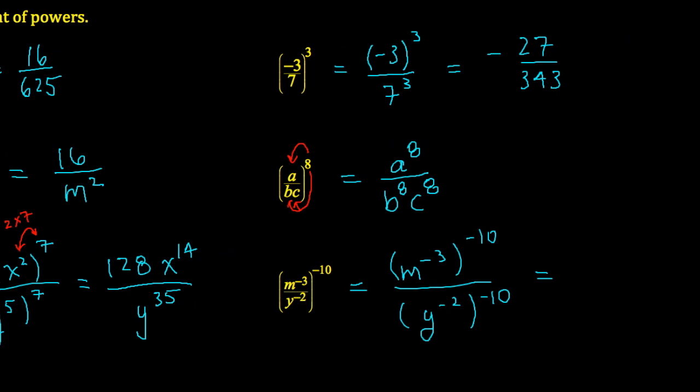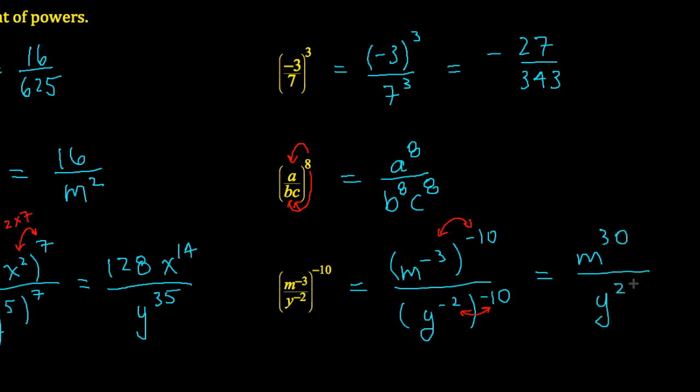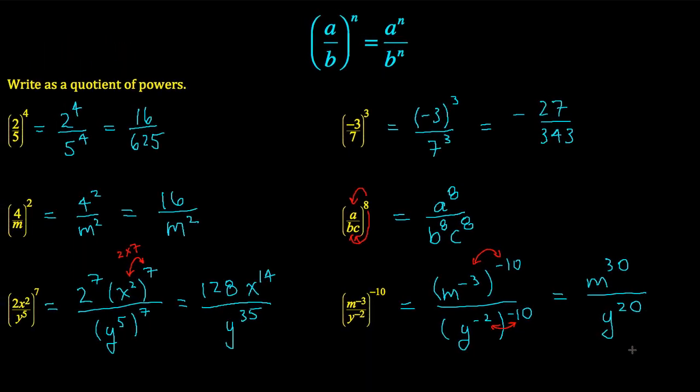Again, applying that power of a power rule, I'm going to multiply these 2 exponents together, and I'm going to multiply these 2 exponents together. And so my final answer becomes m to the exponent 30 divided by y to the exponent 20. Nothing more to it, and I'm out of time.